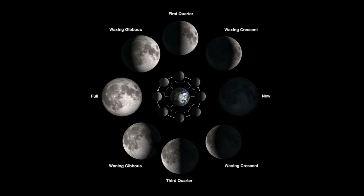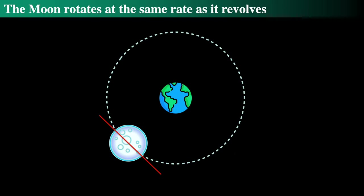But first, let's take a quick trip into why the Moon rotates at the same rate as it revolves. What we have here is a cartoon of the Moon and the Earth, and I've put a red line through the Moon just to demark the side that we see from Earth. We're pretending that we're looking straight down on the North Pole of the Earth and the Moon, and also pretending the axes of rotation and revolution are all the same — which is not true. But the most important thing is that red line.